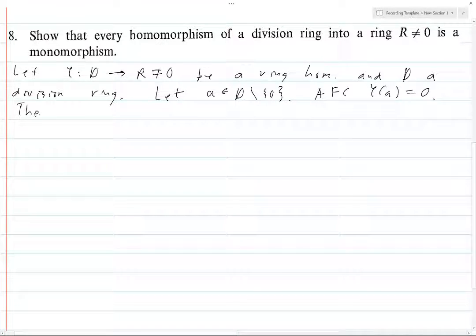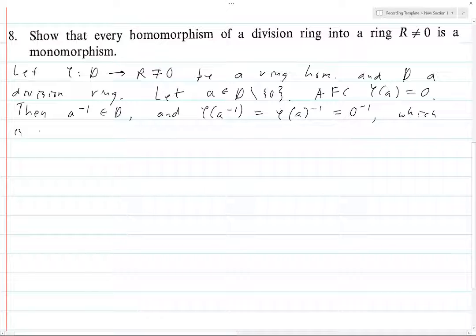So if phi of A is 0, then A inverse is in D because A is not 0, and because D is a division ring. And phi of A inverse is phi of A inverse equals 0 inverse, which is not defined.